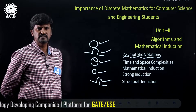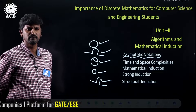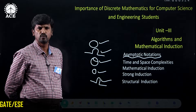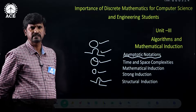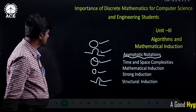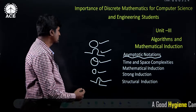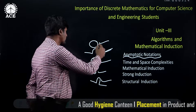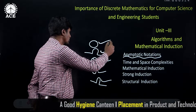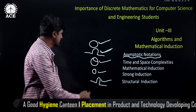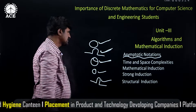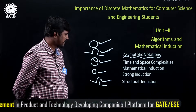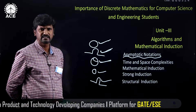For every algorithm, we find the best case, worst case, and average case. For the best case, we use Big Omega notation. For the worst case, we use Big O notation. For the average case, we use Big Theta notation. Mathematical induction, strong induction, and structural induction are also covered in this unit.